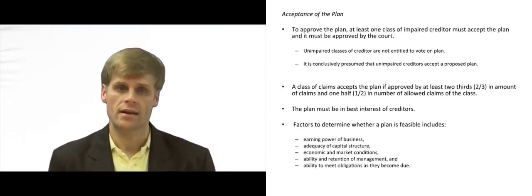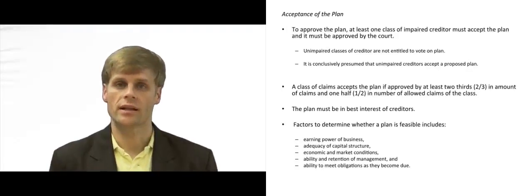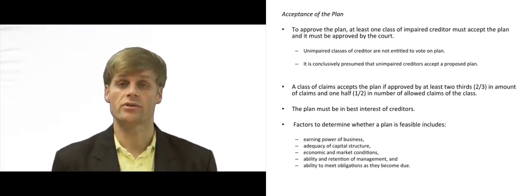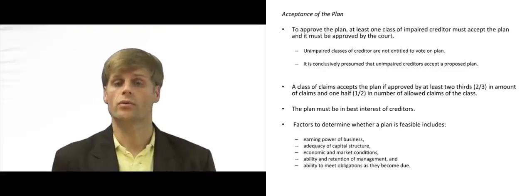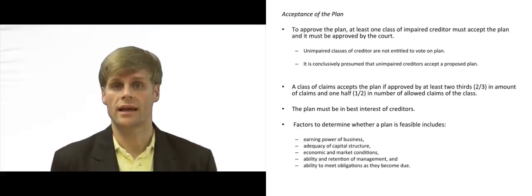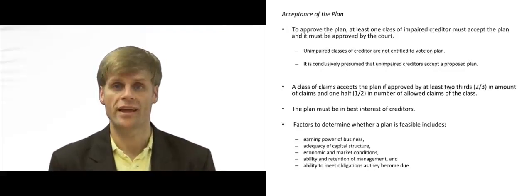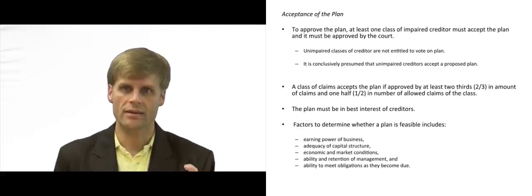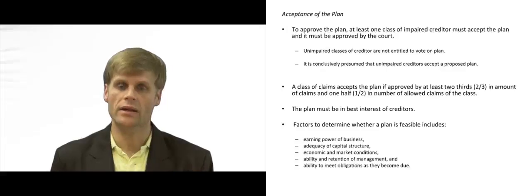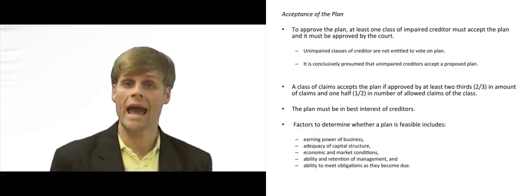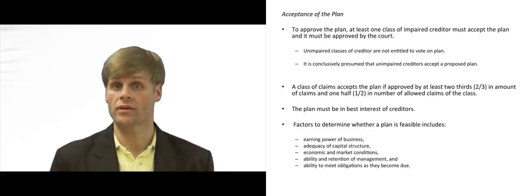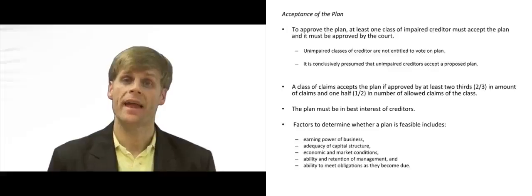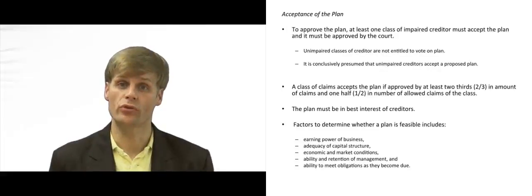In the voting process, the plan is submitted to the classes of creditors. Two-thirds of total claims against the estate have to approve it, and within that impaired class, more than one half of the creditors in that impaired class have to approve the plan.